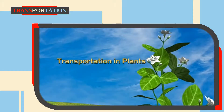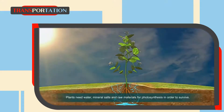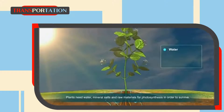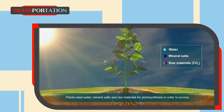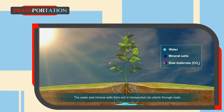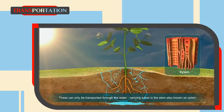Transportation in plants. Why do plants need a transport system? Plants need water, mineral salts, and raw materials for photosynthesis in order to survive. Water and mineral salts from the soil are transported into plants through roots, and can only be transported through the water-carrying tubes in the stem, also known as xylem.